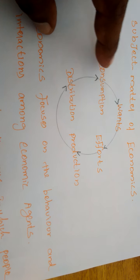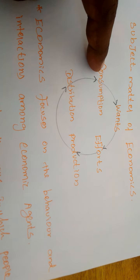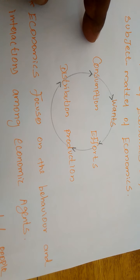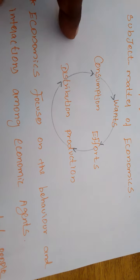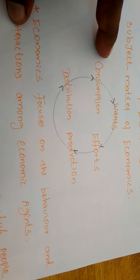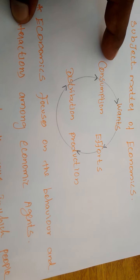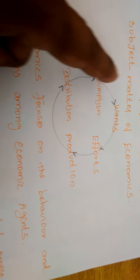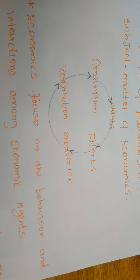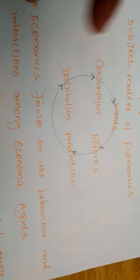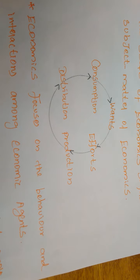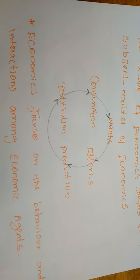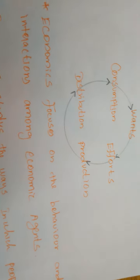Once one want is satisfied and completed, the next want will arise. If you satisfy one want in our mind, after satisfaction another want will appear. In this way the cycle continues — the economic activity keeps moving in a circular manner.